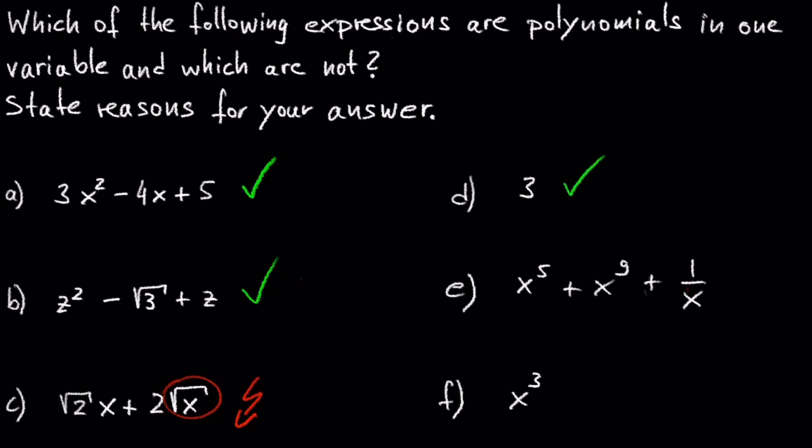In E we have x to the 5th plus x to the 9th plus 1 over x. In this example we see that the variable x is in the denominator, which is not allowed in polynomials. So this is not a polynomial.